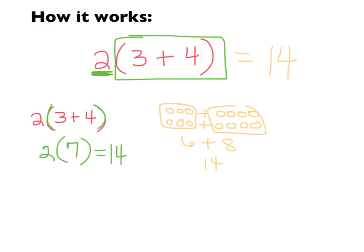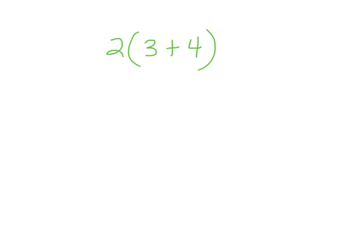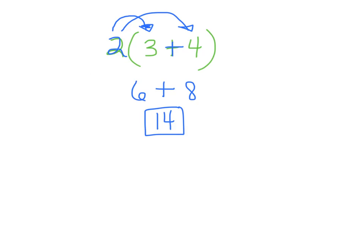Now I'm going to show you how the distributive property works so we get the same answer. You take the outside number 2 and multiply it by both things inside. You distribute the 2 to the 3, giving 2 times 3, which is 6. Then do 2 times 4, which is 8. Keep the plus sign in the middle. So 6 plus 8 gives me 14 — same answer. That's the distributive property: take that number and distribute, or multiply it by both numbers on the inside.